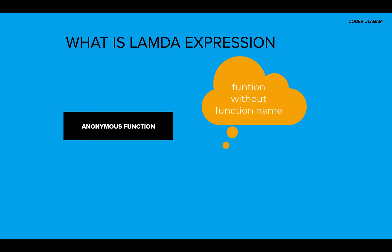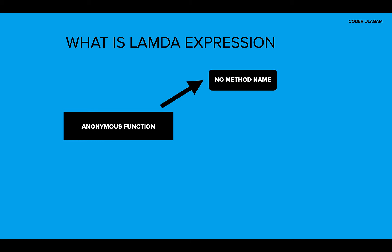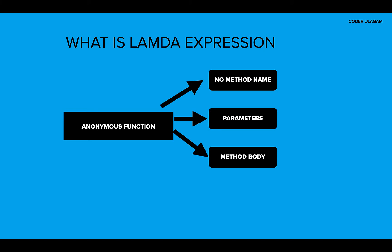This is functional style programming. What are the characteristics of this anonymous function? There is no method name required. Parameters can be passed, just as you have parameters for methods. The method body — whatever we write in a method — is also applicable for a lambda expression. And there can be a return type for a lambda expression.